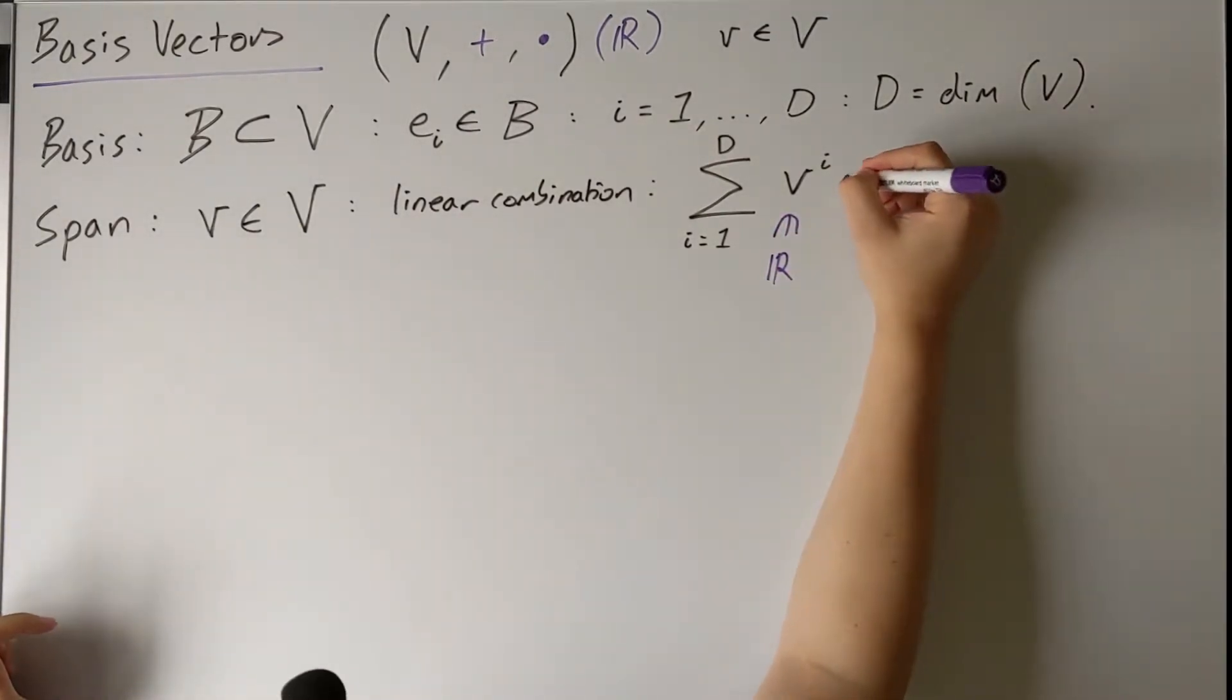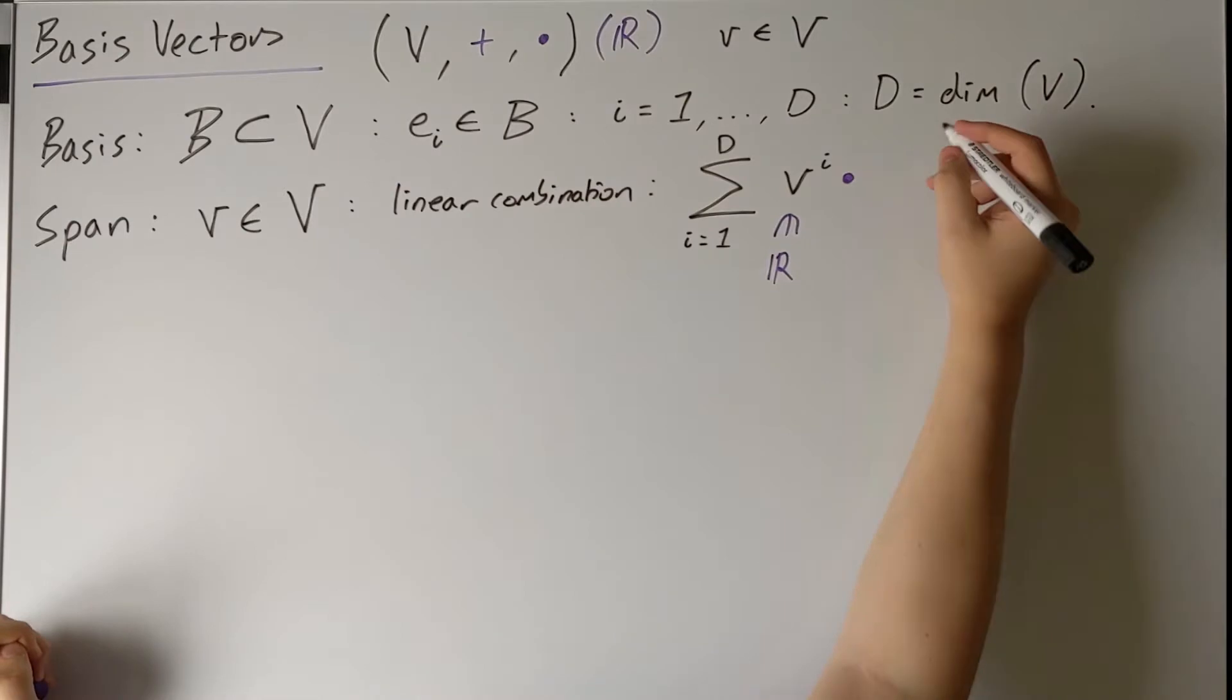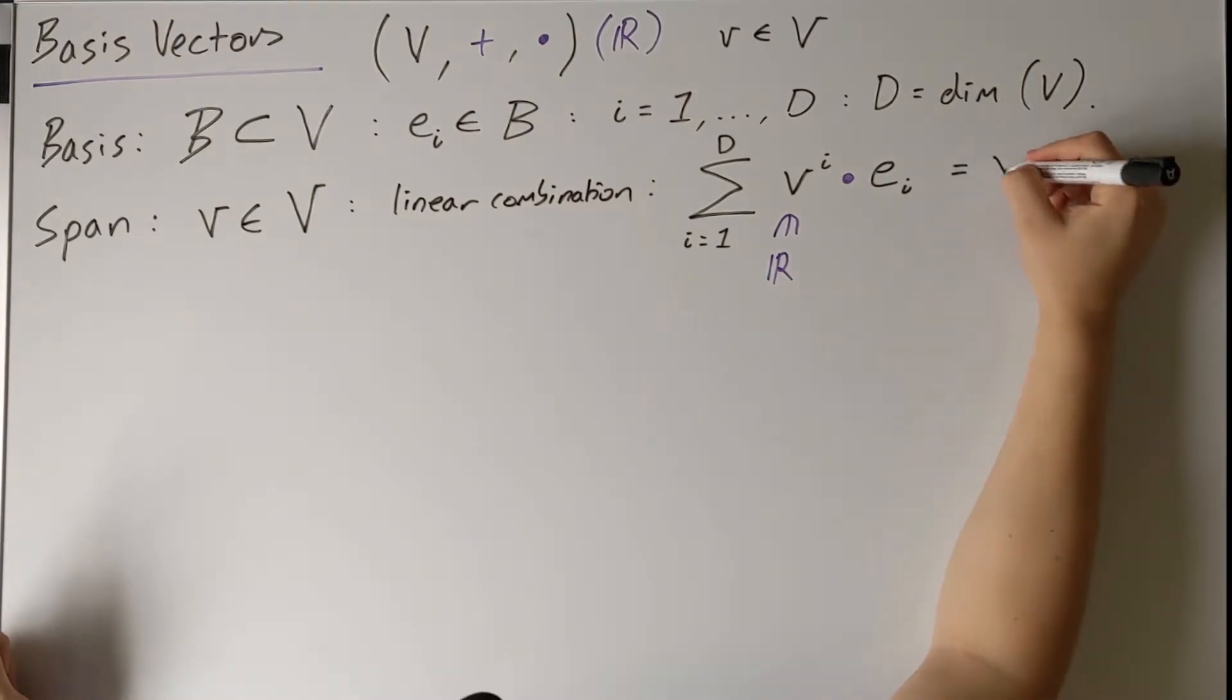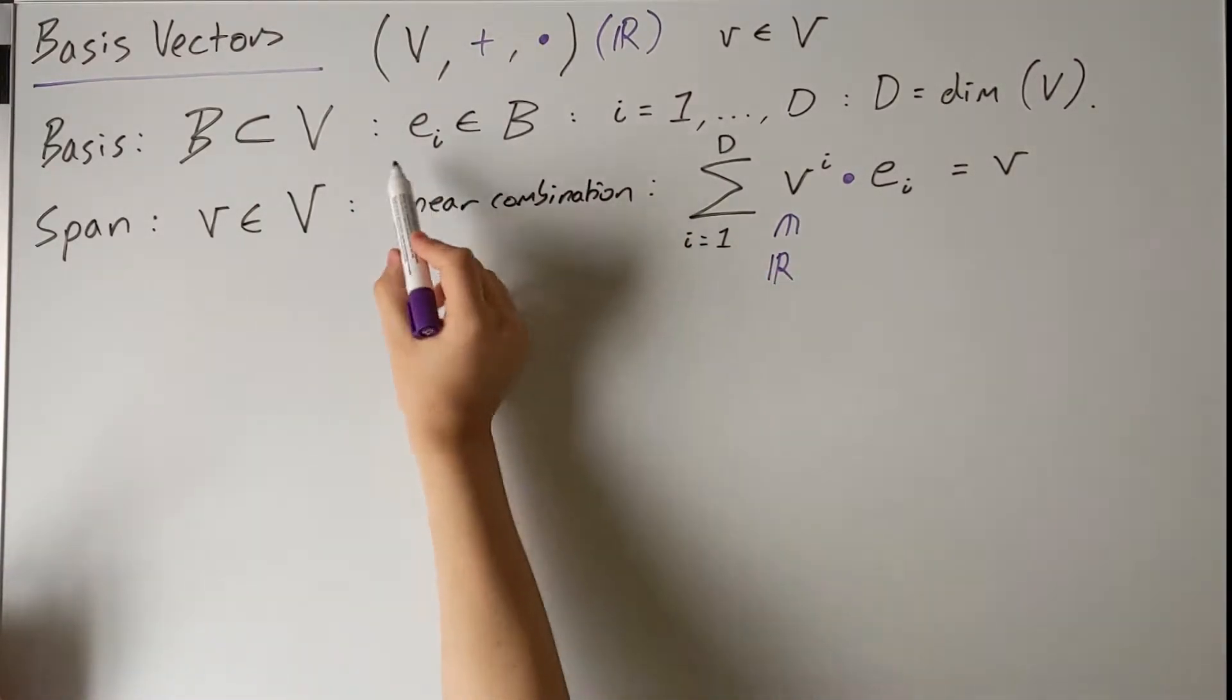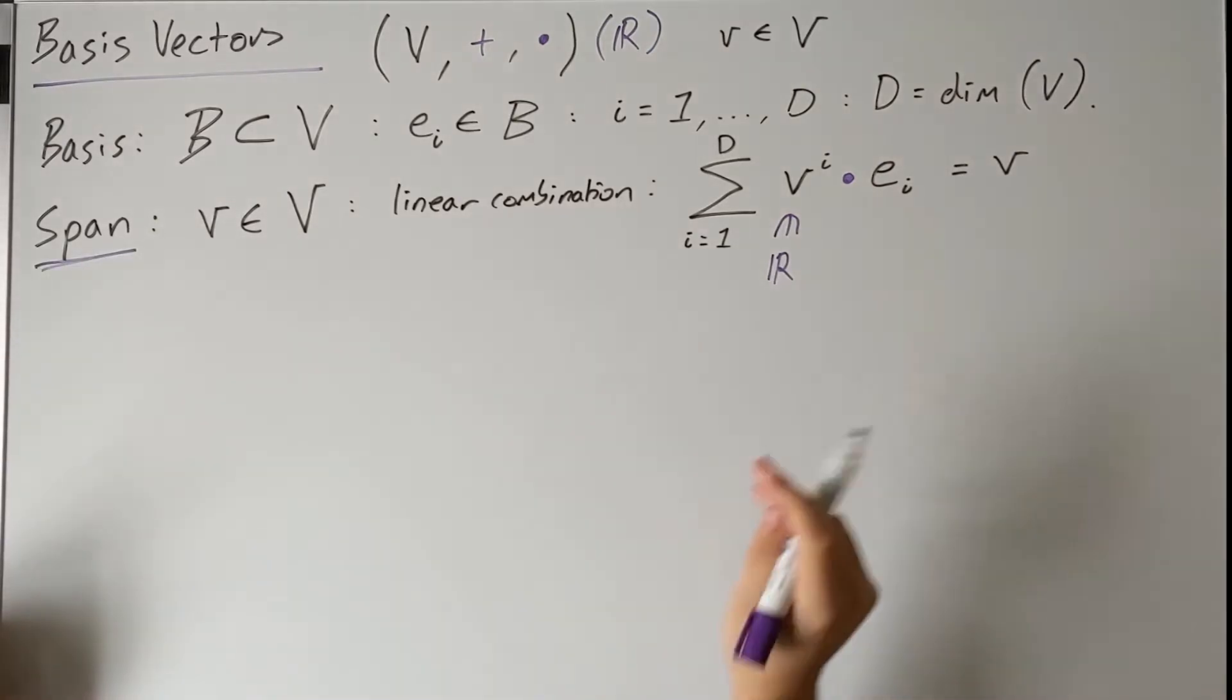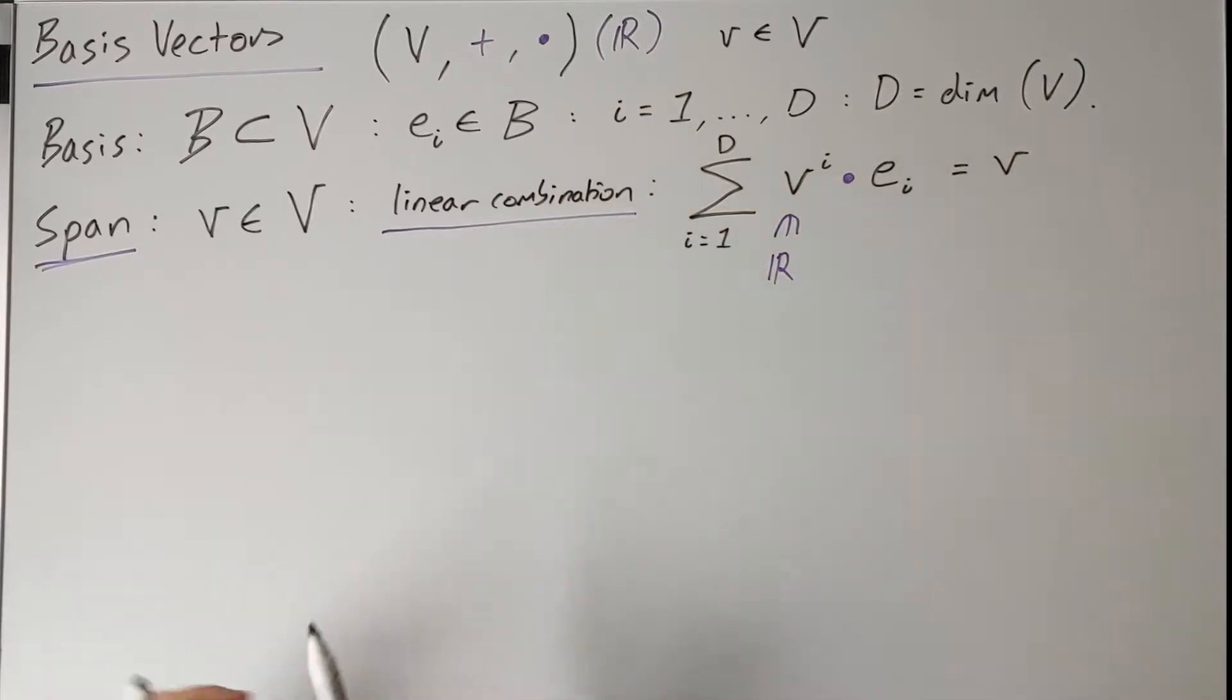And then since it's a scalar, all we can do is scalar multiply something, a vector, and we scalar multiply these v components with some particular basis vector. And this whole thing is equal to the vector. So this is what it means when we say that these basis vectors span the space.